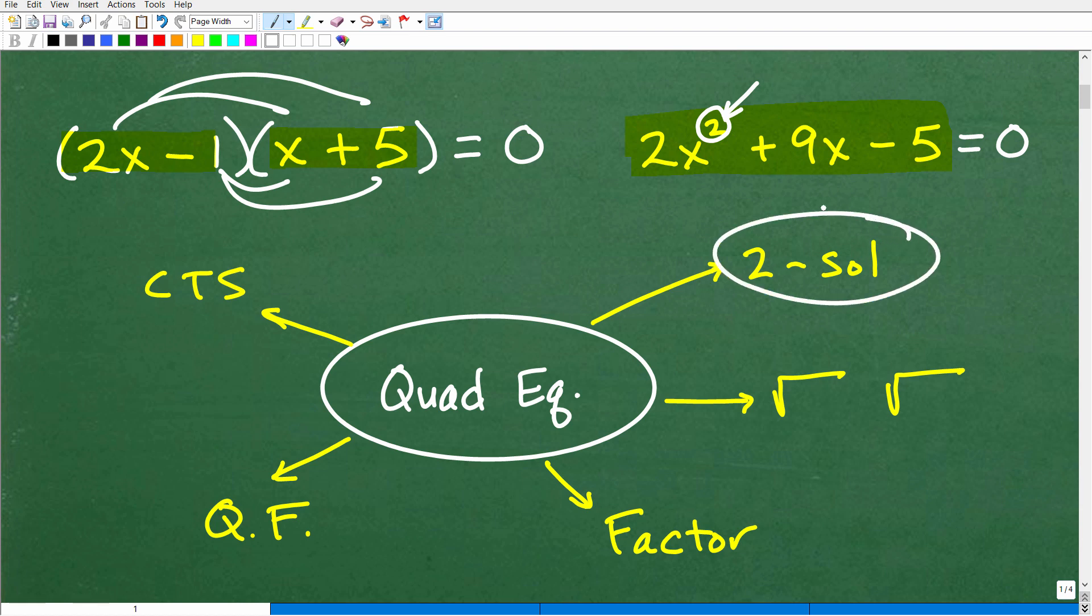Well, the first thing is that you always are going to have two solutions when it comes to any quadratic equation. Okay, that could be two imaginary number, complex number of solutions, or two real number of solutions. So, anyways, but the bottom line is you will have two solutions.